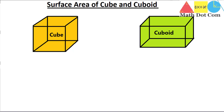We have to find the surface area of the cube and cuboid, rather than the area of the cube and cuboid. The easiest way to find the surface area of the cube is to take one face of the cube, find its area, and then multiply by the total number of faces.